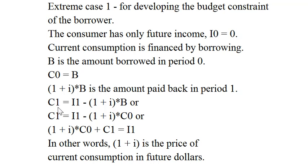Consumption in period one is the income in period one less what you have to pay off of the loan. Or substituting back in, consumption in period one is the income in period one less (1 + i)*C0.